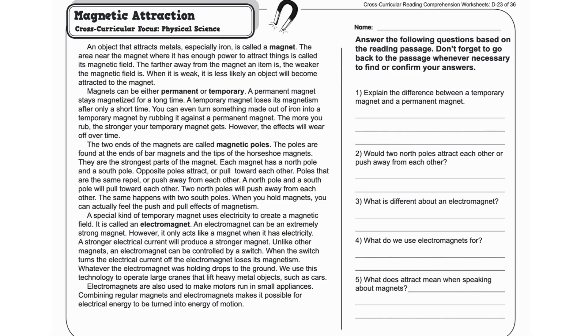Magnetic attraction. Cross-curricular focus: physical science. An object that attracts metals, especially iron, is called a magnet.